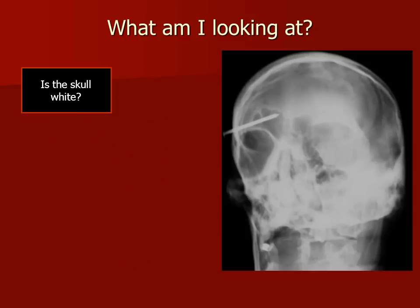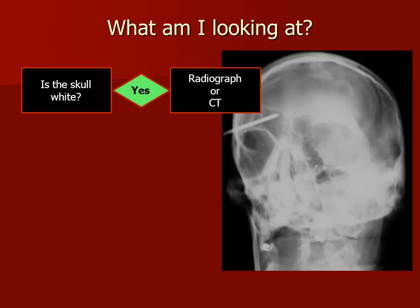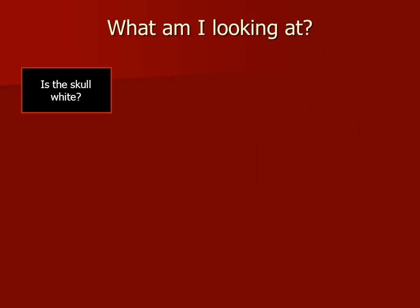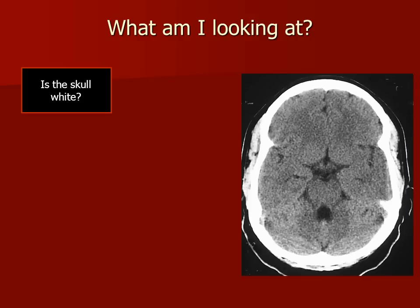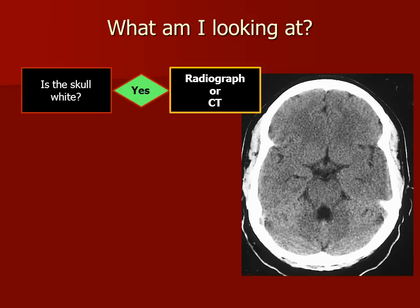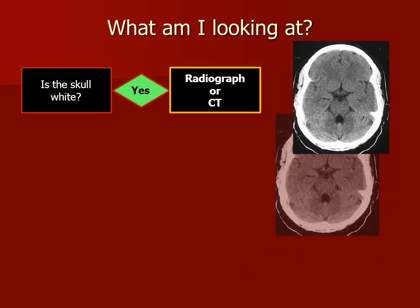If the skull is white, as in this image here, it might be either a radiograph or a CT scan. This looks like a skull radiograph and we can easily see that there is a nail in the patient's right orbit. If we look at this image here, we can see the skull as a circumferential white ring around the outside, and the cerebrospinal fluid in the suprasellar cistern and fourth ventricle is dark. So this is a CT scan.